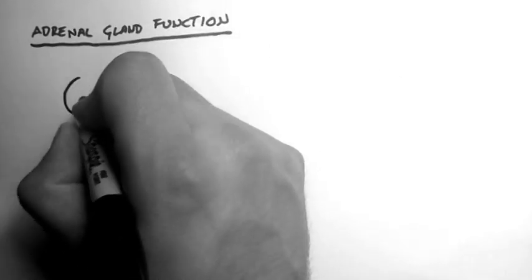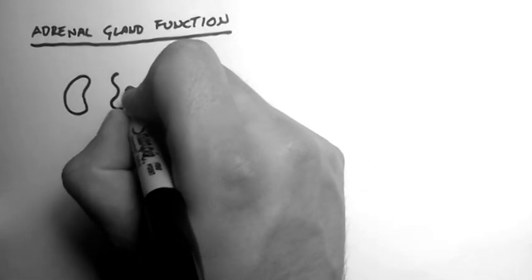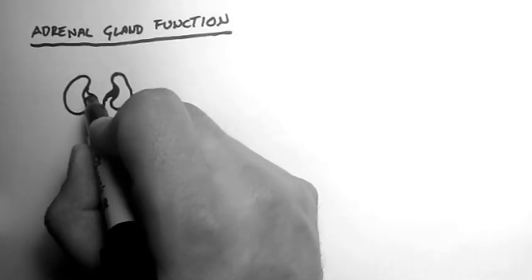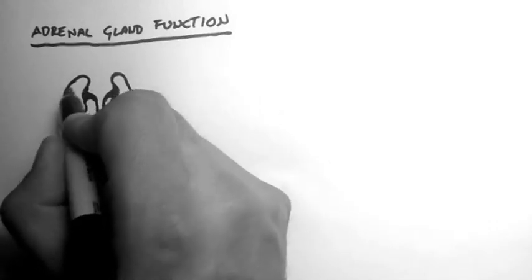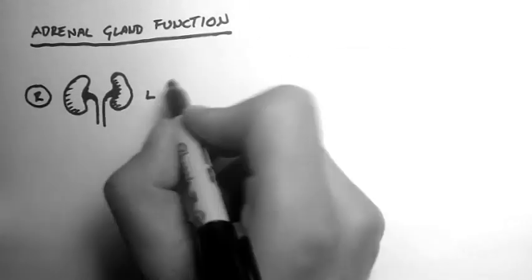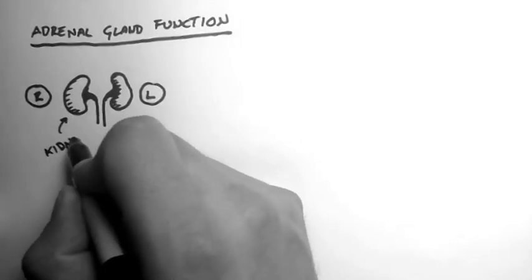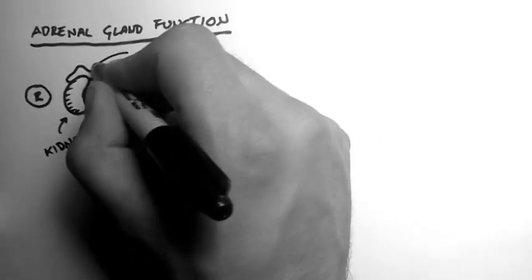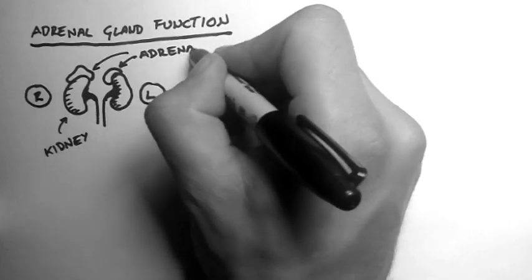Let's start off by talking about where the adrenal glands are located. Here are the kidneys and they are situated in the abdomen. This is the left side and the right side. I notice the left is a little higher than the right. Now on the left kidney and the right kidney are these two little hats, and they are called the adrenal glands.